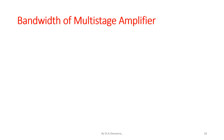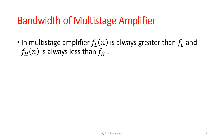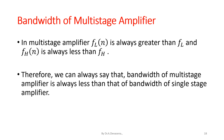Now we conclude the bandwidth of multistage amplifier. In multistage amplifier, FL(N) is always greater than FL and FH(N) is always less than FH. Therefore, we can always say that bandwidth of multistage amplifier is always less than that of bandwidth of single stage amplifier.